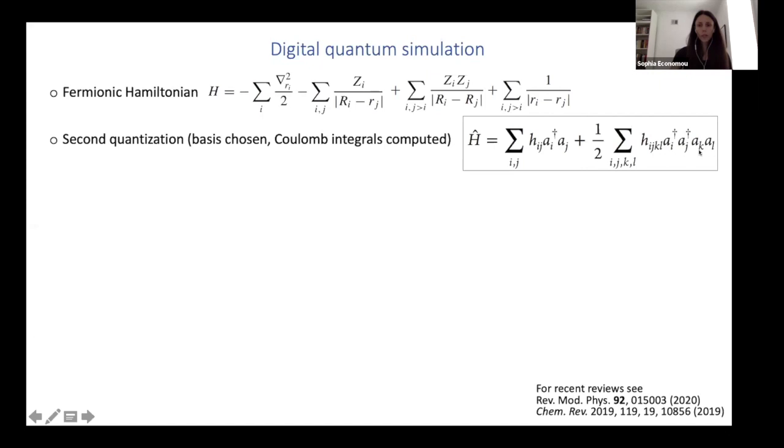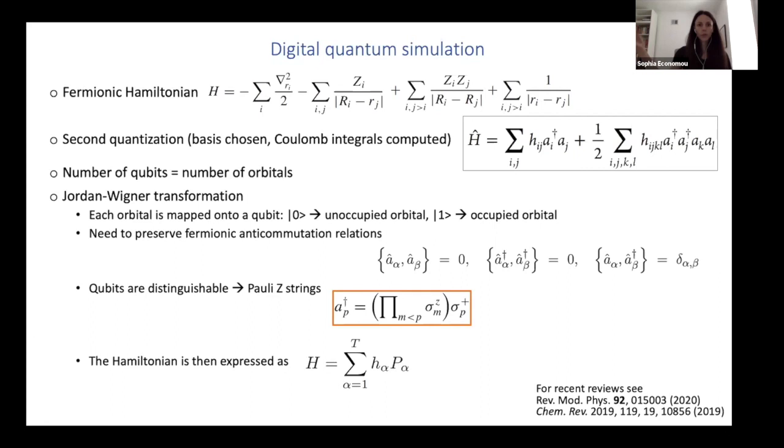Now, one issue is that we need to map the fermions to qubits. And since fermions can be, fermionic orbitals can be either occupied or unoccupied, it's very natural to map these two states onto the two states of a qubit. And the way to do that is something called the Jordan-Wigner transformation, which is well known in many areas of physics and has pre-existed this field, where you map the zero to an unoccupied orbital and the one state of the qubit to an occupied orbital.